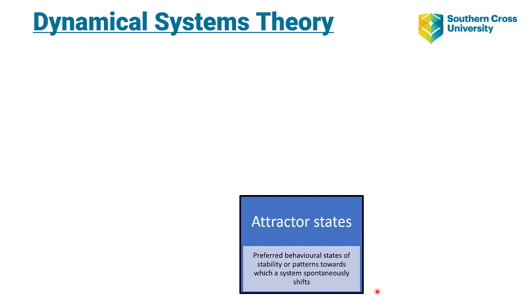Now we will talk about each of these sections in more context, starting with attractor states. An attractor state is our preferred behavioural steady state — a stable pattern of behaviour into which our neuromuscular system spontaneously shifts. We can conceptualise an attractor state as a well that a ball falls into. A nice deep well means that attractor state is well ingrained, with a preferred behaviour that can be obtained and utilised to produce a movement outcome.